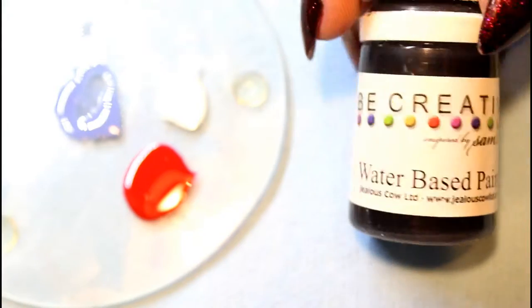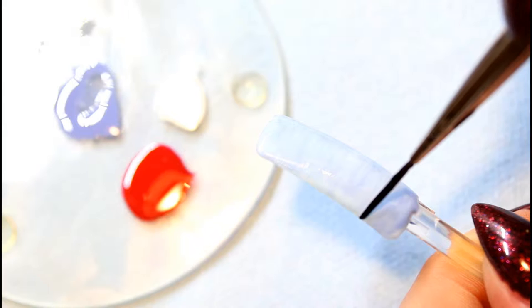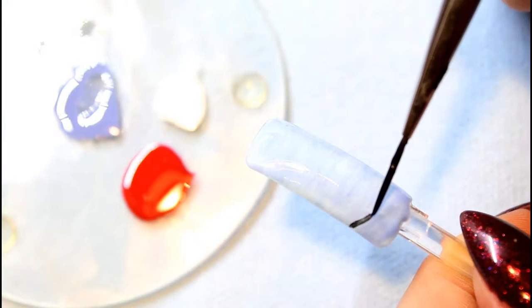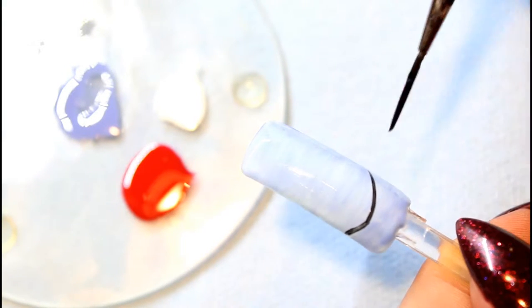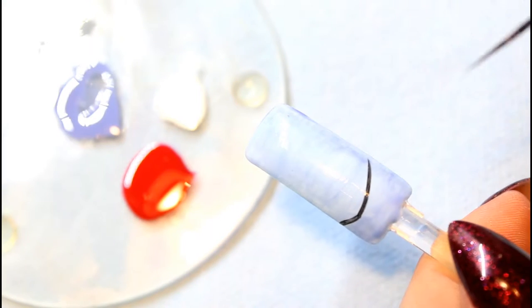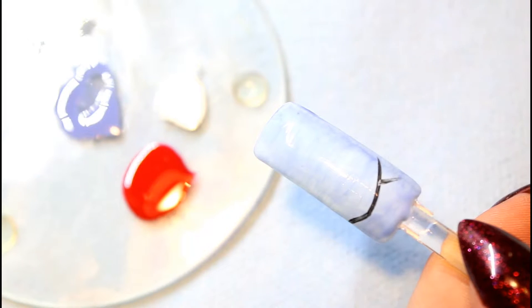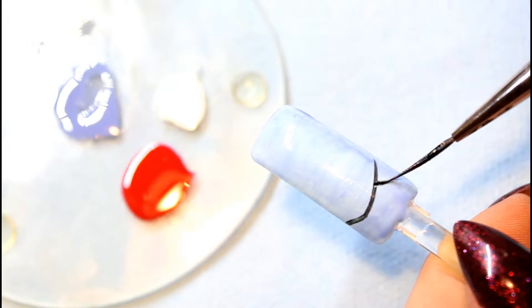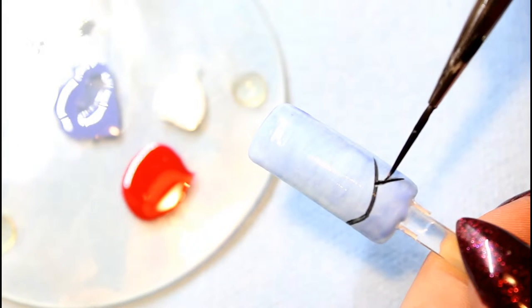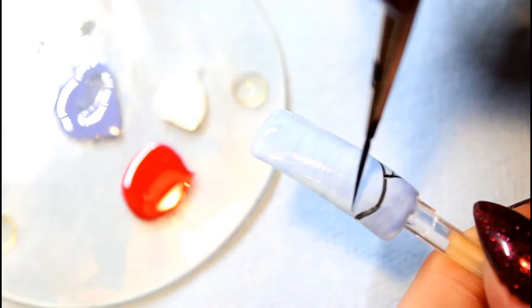Next, you will need a black acrylic paint. I like the Be Creative brand. Using your striper brush, you are going to start painting in branches for your tree. I am painting them in a little bit lighter and I will go back in and darken and add in more detail.